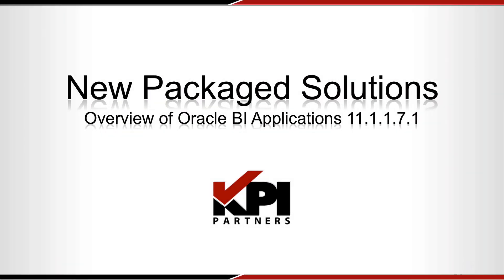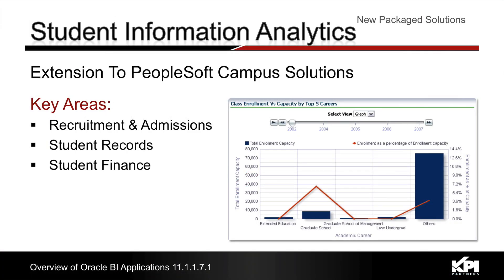The release of 11.1.1.7.1 features two new modules for Student Information Analytics and Indirect Spend Planning. Oracle Student Information Analytics is a much-anticipated extension to PeopleSoft Campus Solutions and will likely be a key implementation initiative for thousands of higher ed institutions currently using the Campus Solutions ERP system. The key areas of analysis in the new module are recruitment and admissions, student records, and student finance.